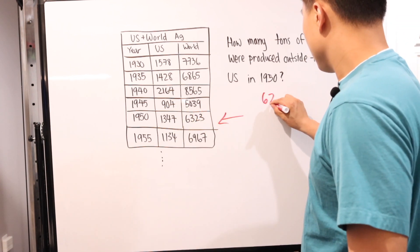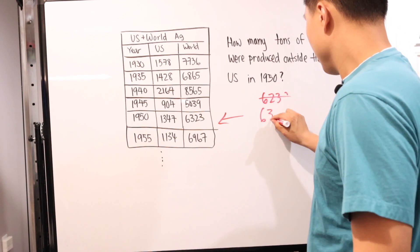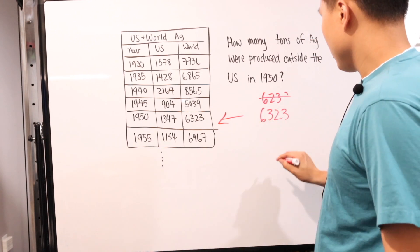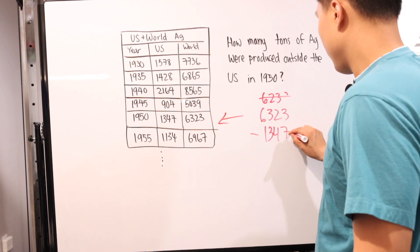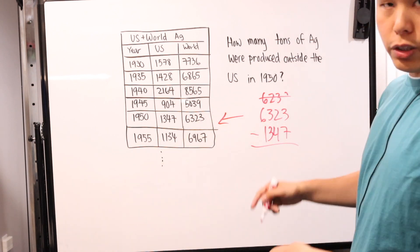So in order to find the amount of silver produced outside of the U.S., all you have to do is just get the amount produced by the entire world and take out what's in the U.S. So it's a simple subtraction problem once you know the information you're looking for. So in this case, you have 6,323. So I thought it was kind of weird. And then subtract 1,347. Simple as that.